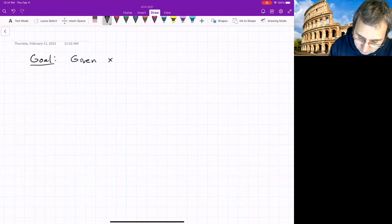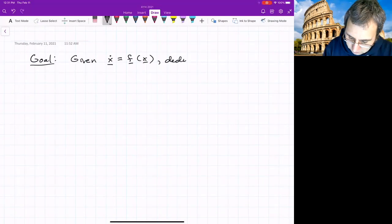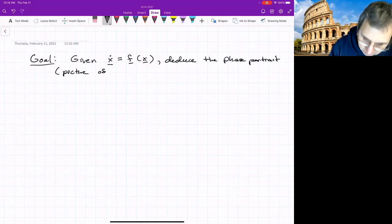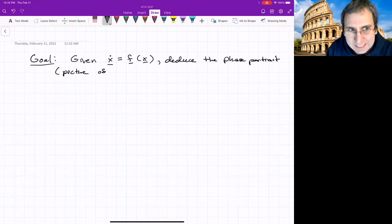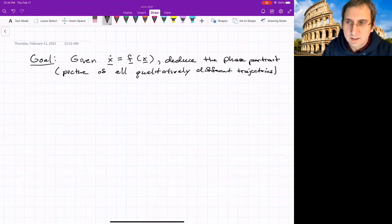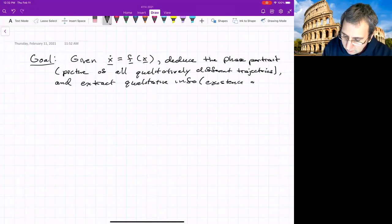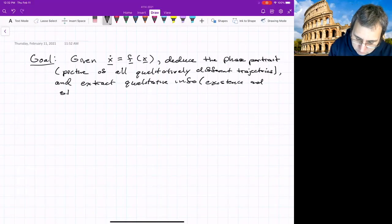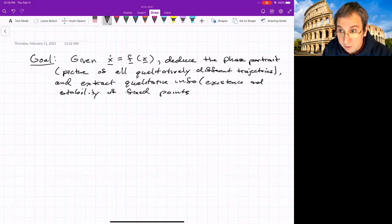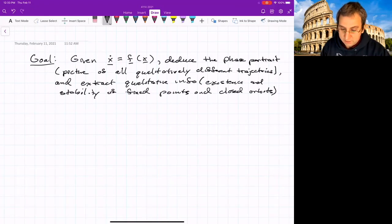Let me start with our goal. Given the two-dimensional vector field, we want to deduce the phase portrait. That means the picture of all qualitatively different trajectories and extract some qualitative info, such as the existence and stability of fixed points, as well as any periodic orbits or closed orbits.